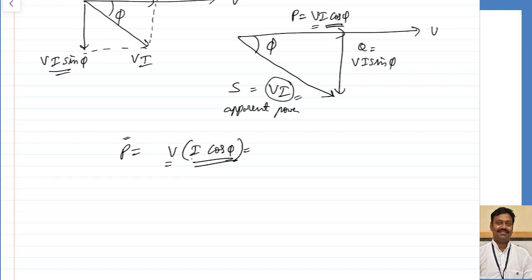S equals V·I, which is the power actually supplied from your source. From the source's point of view, the source is supplying a voltage V and current I, so it assumes it is supplying a power of V·I — that is why it is called apparent power, which is assumed to be transmitted. To complete this triangle, one more component comes in: the reactive power Q.